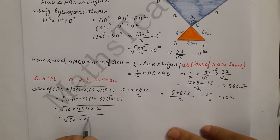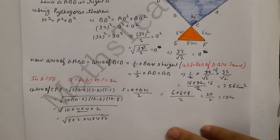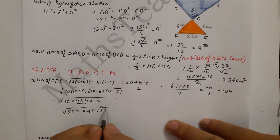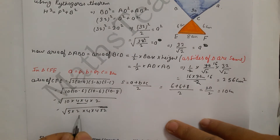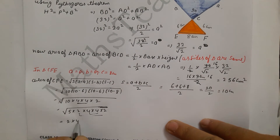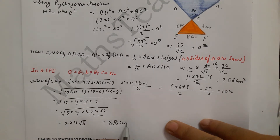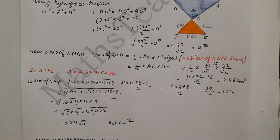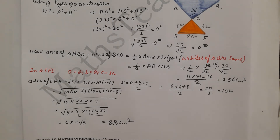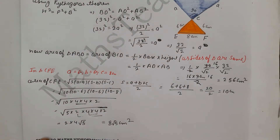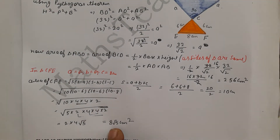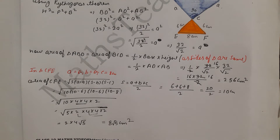Factoring inside the root: 10 × 4 × 4 × 2 = 320. Taking out pairs: 4 × 4 gives 4 outside, 2 × 2 gives 2 outside, leaving √5 inside. So the area = 8√5 cm². The orange triangle has an area of 8√5 cm².